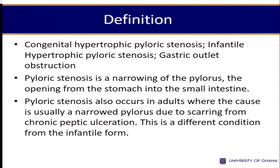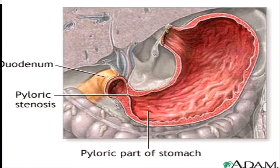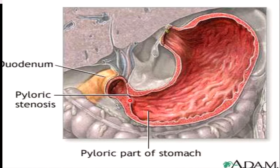So what is pyloric stenosis? Ideally it's supposed to be discussed under pediatrics. The stomach has the pylorus which leads to the duodenum and then to the small intestines. The pyloric area is labelled in the diagram provided. The pylorus is supposed to be patent for food to move from the lesser curvature into the pyloric region out into the duodenum. In pyloric stenosis, the area is narrowed to the extent that sometimes no food is able to pass through into the duodenum.